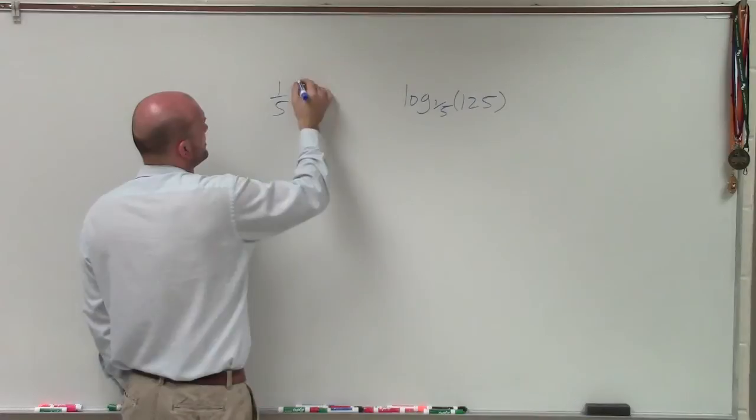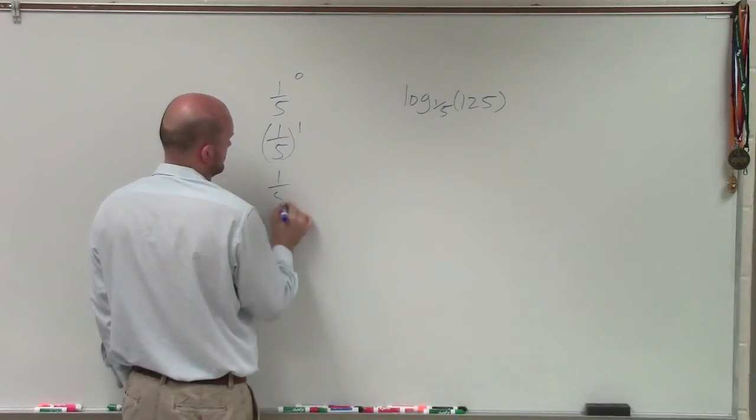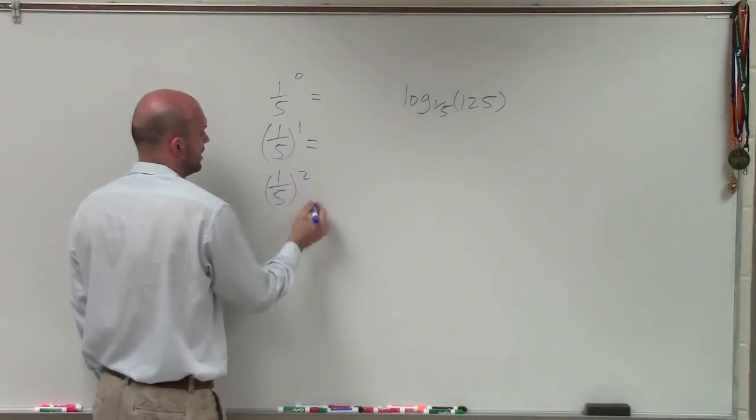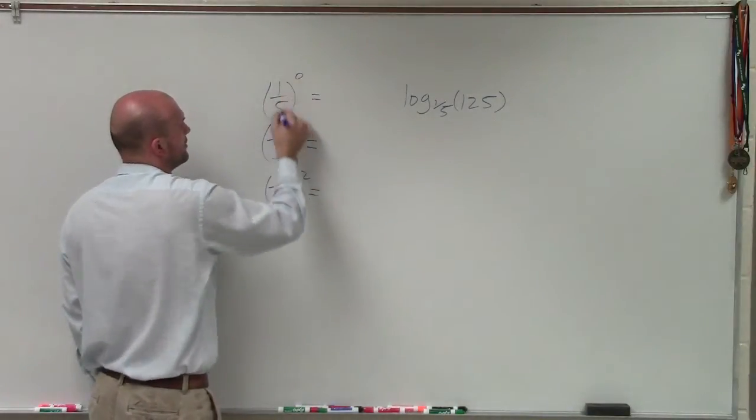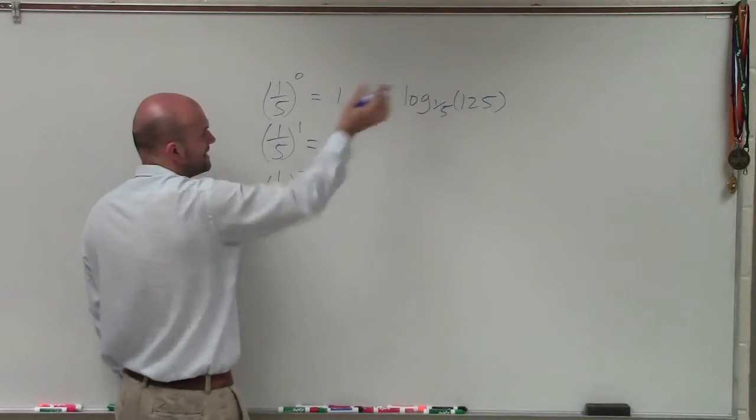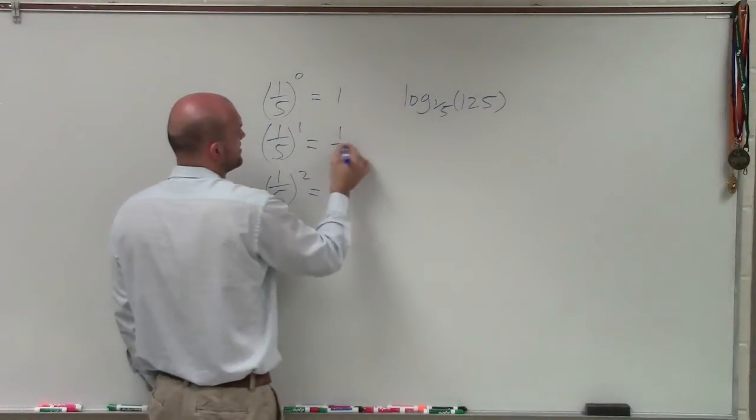So again, if you just start with what we do, let's pick some of our whole numbers, right? 1, 0, 1, and 2. Well, when looking at anything to the 0 power, we know it's 1. So obviously that's not going to be our answer because we need to get 125, not 1. If I raise 1/5 to the first power, that's going to be 1/5.